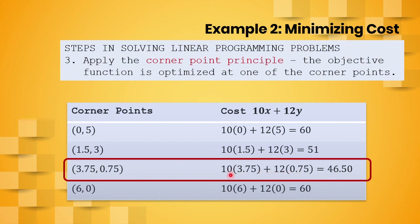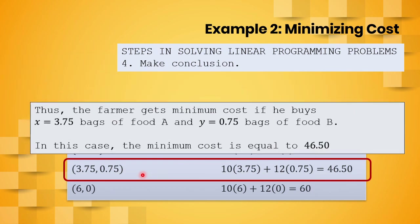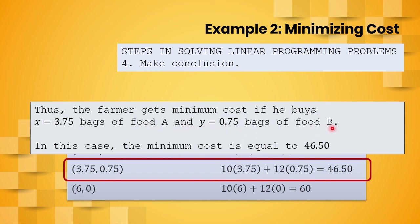For the last step, we make our conclusion. The farmer achieves minimum cost by purchasing 3.75 bags of food A and 0.75 bags of food B, giving a minimum cost of $46.50. Note that fractional bag quantities such as 3.75 and 0.75 are acceptable since it is possible to use partial bags of food. This ends the lecture on linear programming — if you have questions, please comment below.